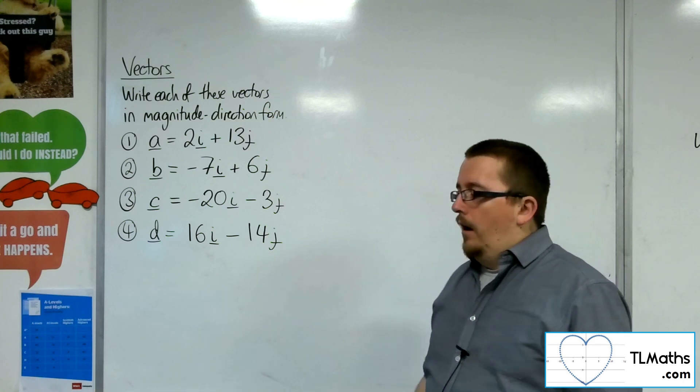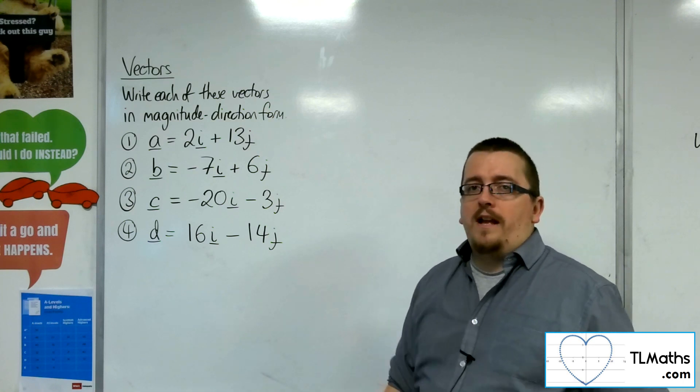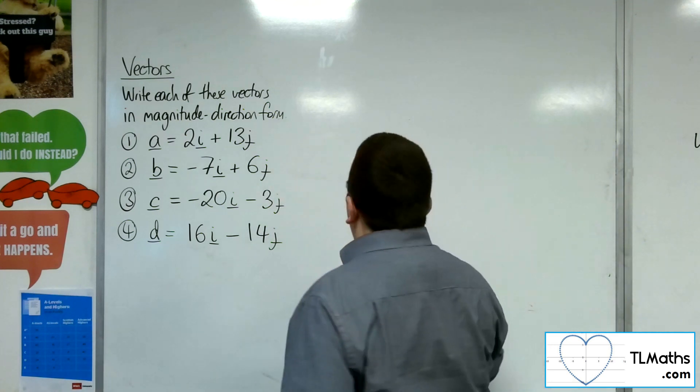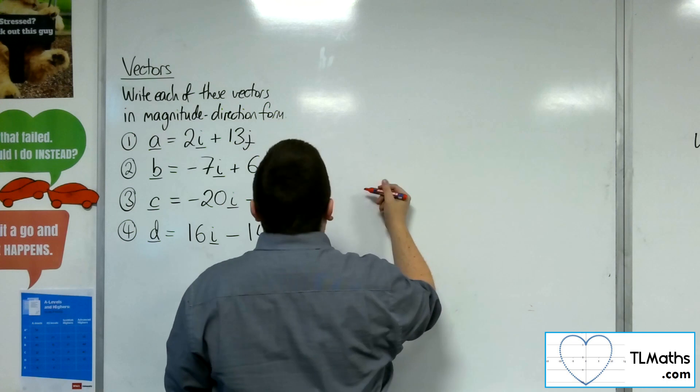So for each one, I'm going to draw a diagram, work out the magnitude, work out the direction. So, let's have a look at the first one, a. So we've got 2i plus 13j.